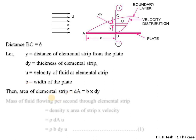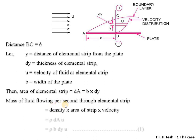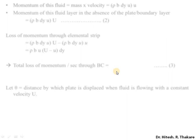The area of the elemental strip can be calculated as dA = b·dy. Then the mass of fluid flowing through the strip per second is calculated using the continuity equation: rho into dA into local velocity u, which gives rho·b·dy·u. This is equation 1, similar to the previous derivation.